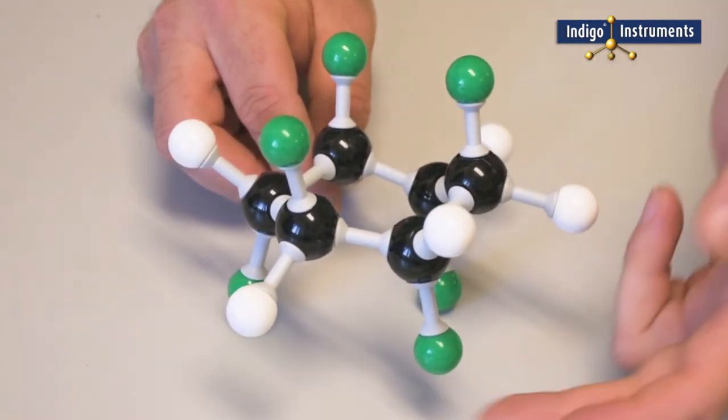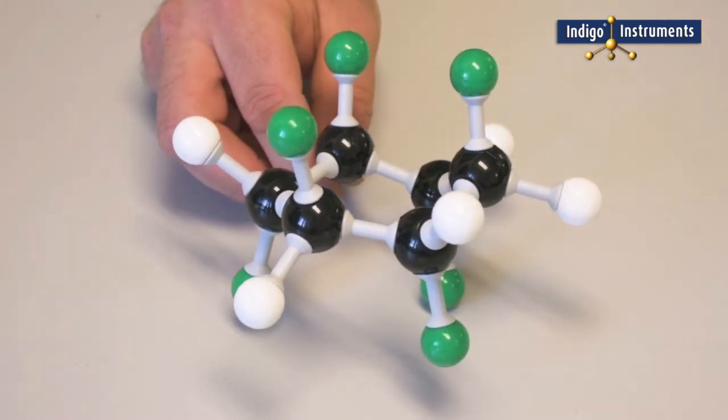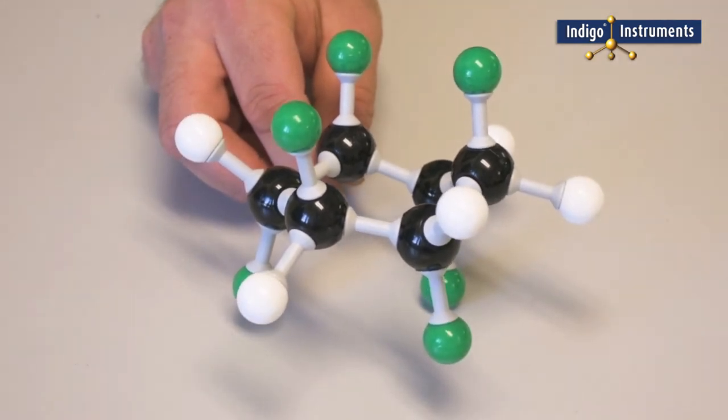Ring flip is important because energetically when bulky side groups are attached to a ring, the lower energy state is when they are in equatorial positions.